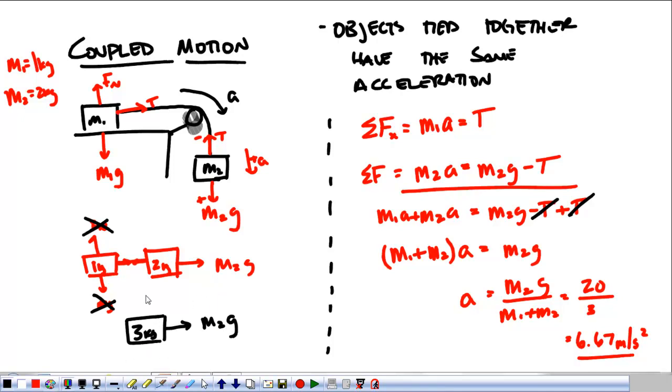What we're going to do is combine these two masses, three kilograms. And really the only net force I have acting on this whole system is M2g. If we do Newton's second law, mass times acceleration is equal to the sum of my forces. Well the whole mass here is M1 plus M2, three times the acceleration is equal to M2g, which is 20. 3A equals 20, A equals 6.67 meters per second squared.